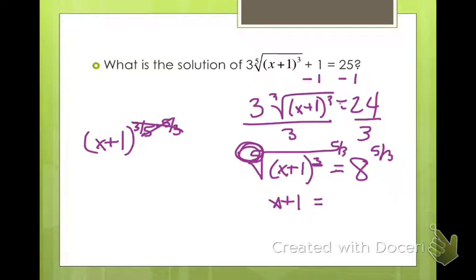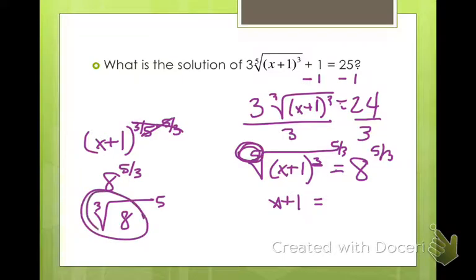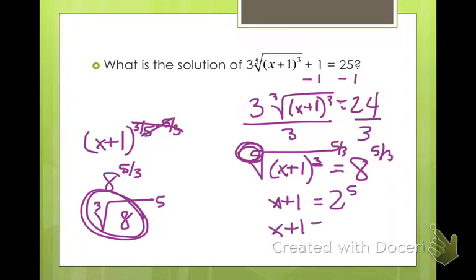Now I have 8 to the 5/3 power, which is the same as the cubed root of 8 to the 5th power. The cubed root of 8 is 2, so we have 2 to the 5th power. 2 times 2 is 4, times 2 is 8, times 2 is 16, times 2 is 32. So x plus 1 equals 32; subtract 1 from both sides and x equals 31.